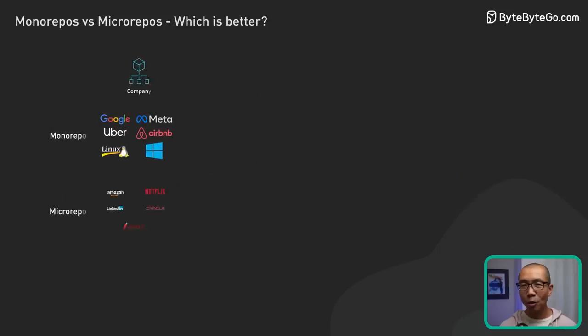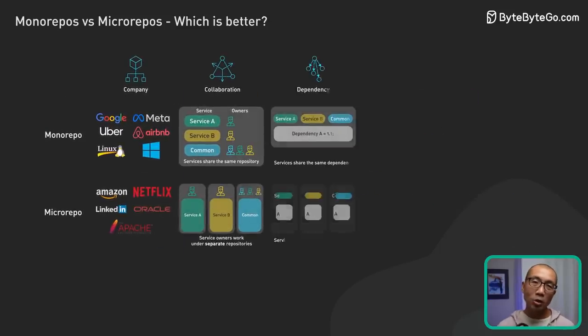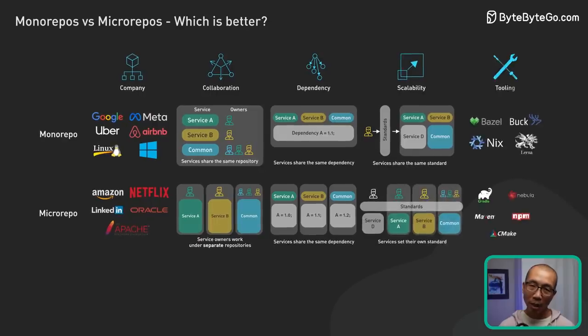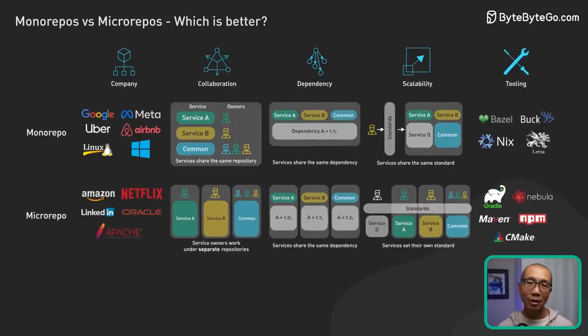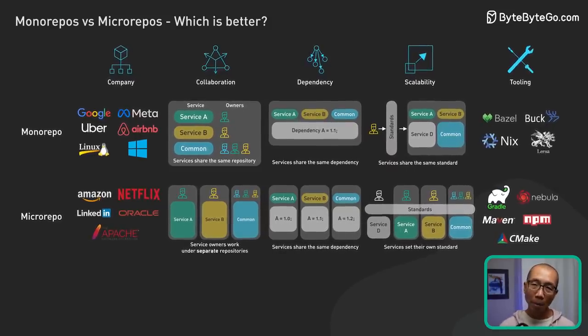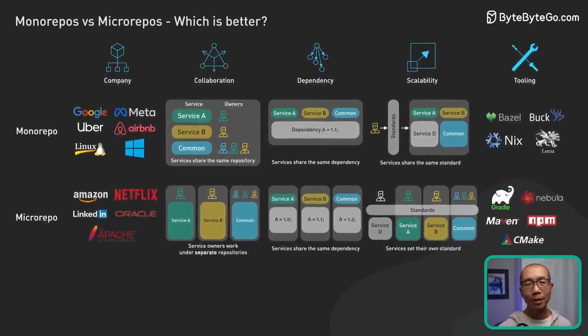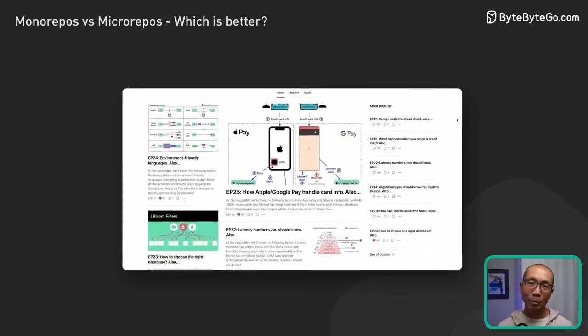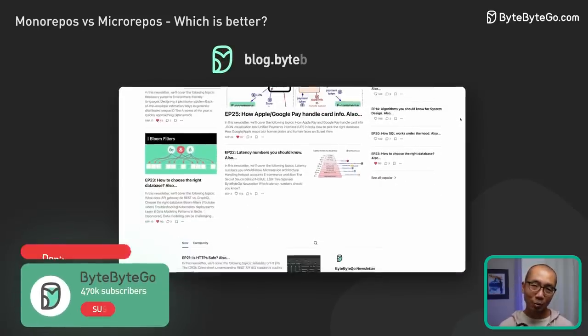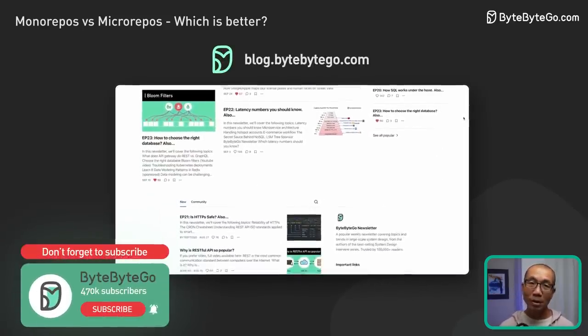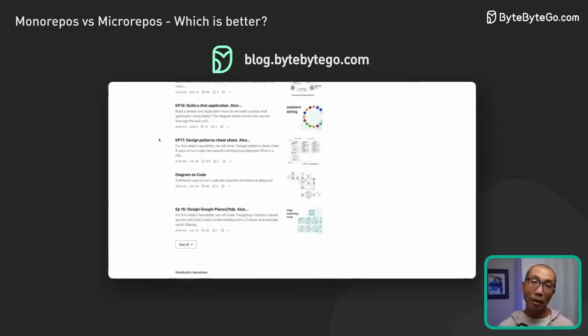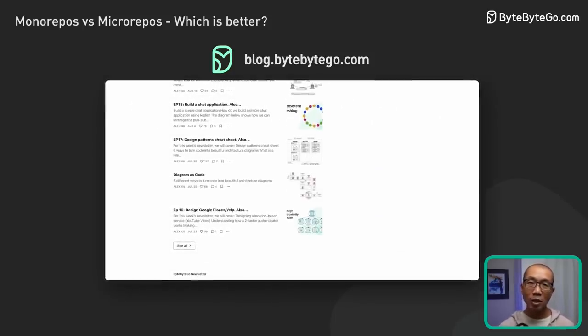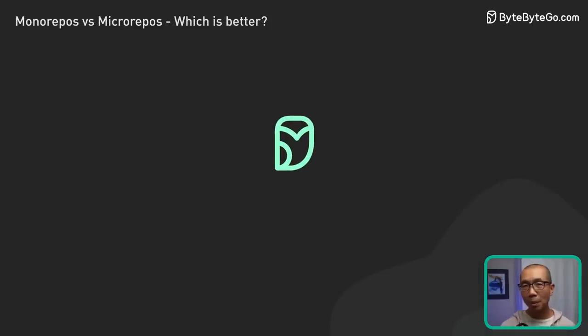So, what worked best for you? Share your chosen strategy in the comments and let us know why you opted for it. Looking forward to hearing from your experiences with monorepos and micro-repos. If you like our videos, you might like our system design newsletter as well. It covers topics and trends in large-scale system design, trusted by 450,000 readers. Subscribe at blog.bytebytego.com